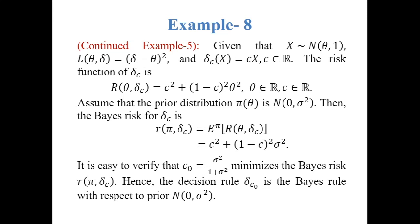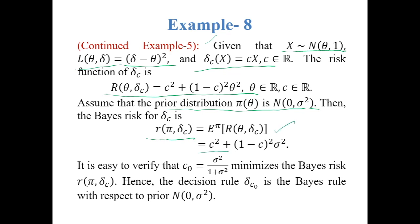Continuing Example 5: recall that X follows normal(theta, 1), the loss function is the squared error loss, and the class of decision rules is delta-c equal to c times X. If we assume the prior distribution is normal with mean 0 and variance sigma-squared, then the Bayes risk for delta-c is: r(pi, delta-c) equals the expected value of r(theta, delta-c), which works out to c-squared plus (1 minus c) squared times sigma-squared. Minimizing this, we find that c-0 equals sigma-squared divided by (1 plus sigma-squared) minimizes the Bayes risk. Hence the Bayes rule is delta-c0.